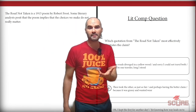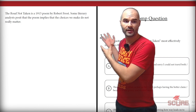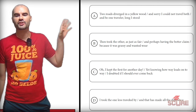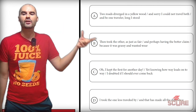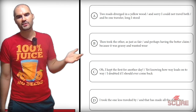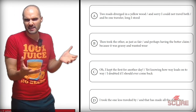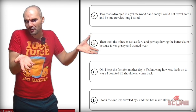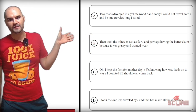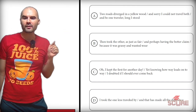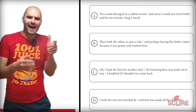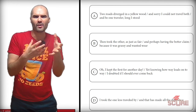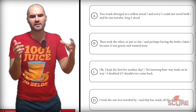Next we have The Road Not Taken. The claim we're looking for says: some literary analysts posit that the poem implies that the choices we make do not really matter. Option A says: 'Two roads diverged in a yellow wood, and sorry I could not travel both, and be one traveler, long I stood.' I don't think this supports the idea that choices don't matter, because he felt bad that he could not take both roads — so it did matter. Option B says: 'Then took the other, as just as fair, and having perhaps the better claim, because it was grassy and wanted wear.' He says one road has a better claim, like maybe one road was better than the other, so I'm not sure this supports the idea that the choice doesn't matter.